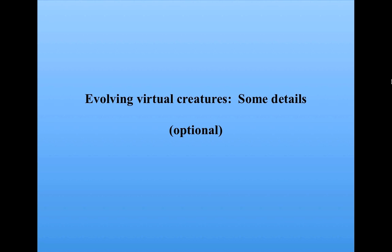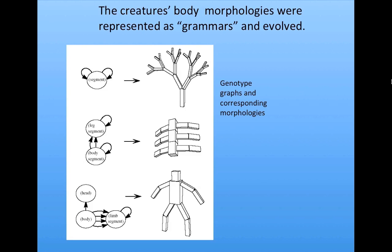The details of the algorithms used by Carl Sims to evolve the virtual creatures are quite complicated. I'm not going to go over all the details — just a very sketchy outline. This part is optional; it's only if you're really interested in how this is done. You can also read Carl Sims' technical papers on this topic by going to the link on the course materials page.